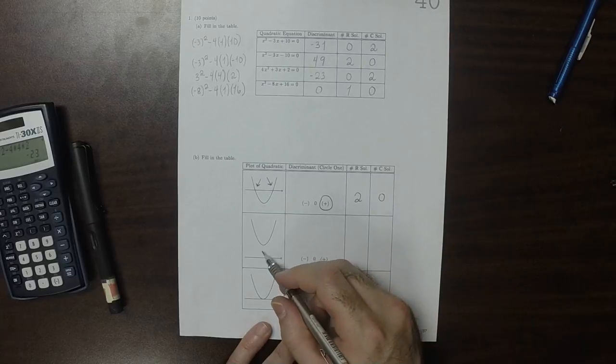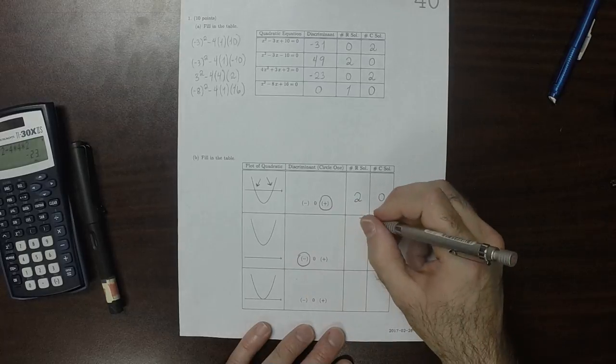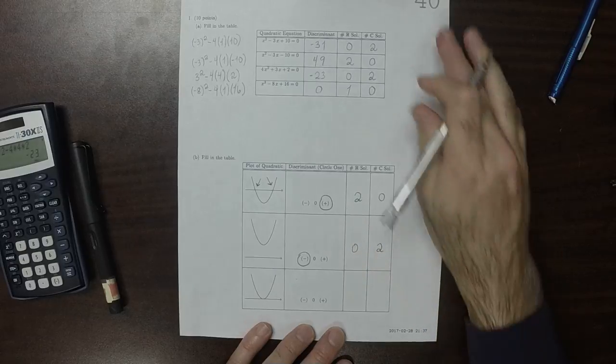Now here, there's no intersections, so that's indicating a negative discriminant. And there would be 0 real and 2 complex solutions.